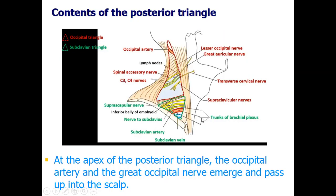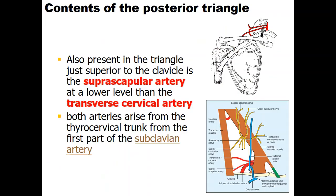At the apex of the triangle, where the two muscle borders meet, we find the occipital artery, an important branch of the external carotid artery arising from its posterior border and supplying the occipital area. At this region we also have the greater occipital nerve, which emerges and passes up to the posterior aspect of the scalp.